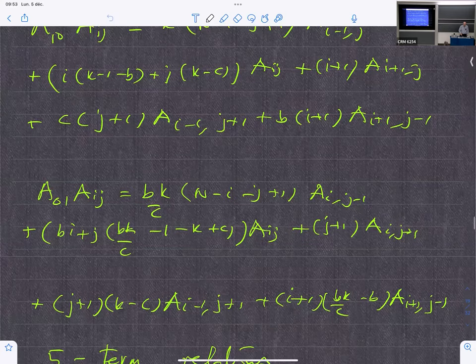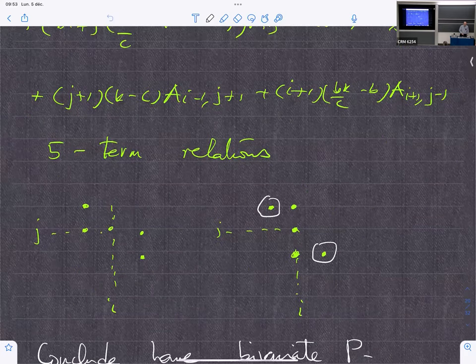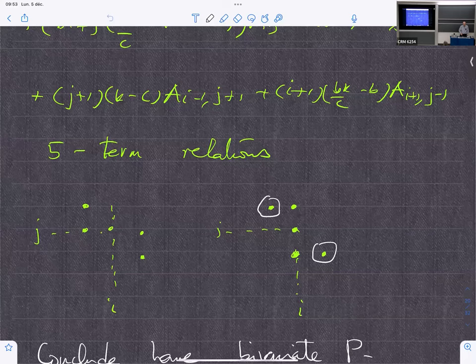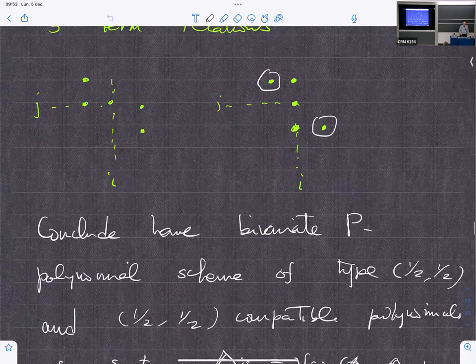And lo and behold, after symmetrization, you have an explicit expression for these adjacency matrices. And they form a P-polynomial scheme because a direct computation gives you the recurrence relation.